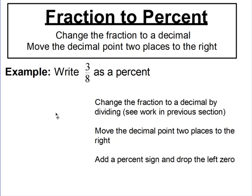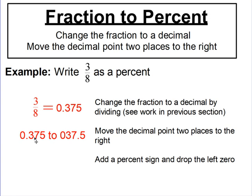If I want to change the fraction into a percent, I start the same way — change the fraction into a decimal first using long division. We already know 3 eighths equals 0.375. Then I go back to the decimal-to-percent rule and move the decimal point two places to the right. It goes from in front of the 3, two spaces over, to between the 7 and the 5. Put a percent sign after that, and 3 eighths is equal to 37.5%.